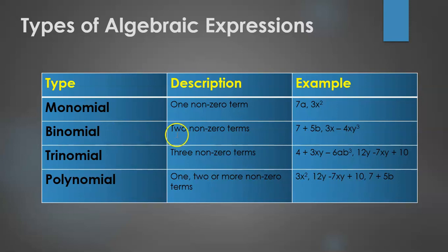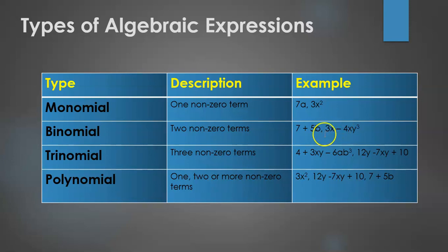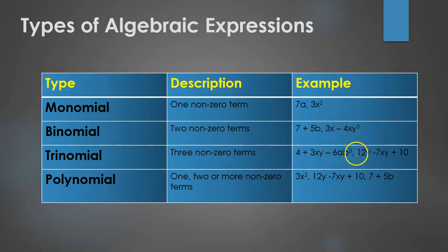Similarly, a binomial consists of two non-zero terms — for example, 7 plus 5b and 3x minus 4xy cubed. In the first, 7 is one term and 5b is the second; in the second, 3x is the first term and minus 4xy cubed is the second. A trinomial comprises three non-zero terms.